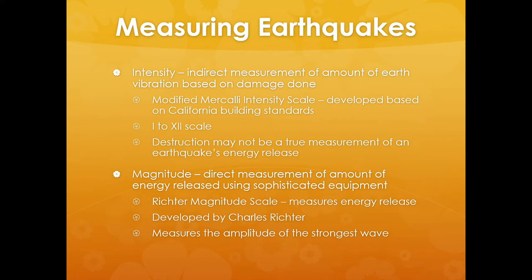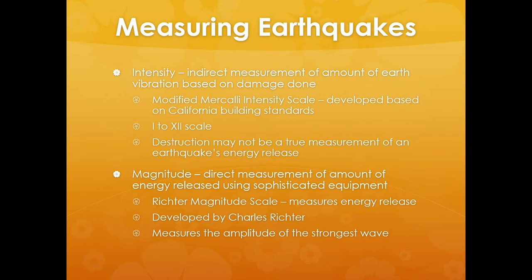There are two ways to measure earthquakes: intensity and magnitude. Intensity is an indirect measurement of earth vibration based on damage done — geologists go out after the earthquake and assess how much damage occurred. The most famous scale for this is the Modified Mercalli Intensity Scale, developed based on California building standards, ranging from 1 to 12. The problem is that destruction may not truly reflect energy release because California buildings are built to high earthquake standards — the same earthquake could rate a 6 or 7 in California but cause 10 or 11 levels of damage in Virginia, where buildings aren't built to that code.